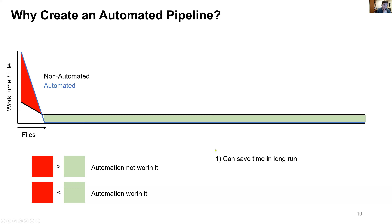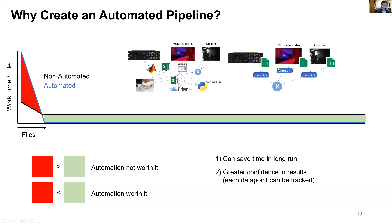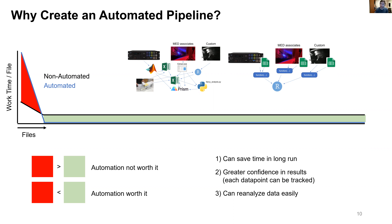The first reason to create a pipeline is saving time. Another reason is confidence — if you get to the end and you're publishing your paper and a reviewer asks how easily you can follow data points back to the source to verify correctness, you need that. The last reason is that you can reanalyze data easily. If you find a new algorithm you want to apply to old data, could you just hit run and automatically do it, or would you have to go back and do it manually?